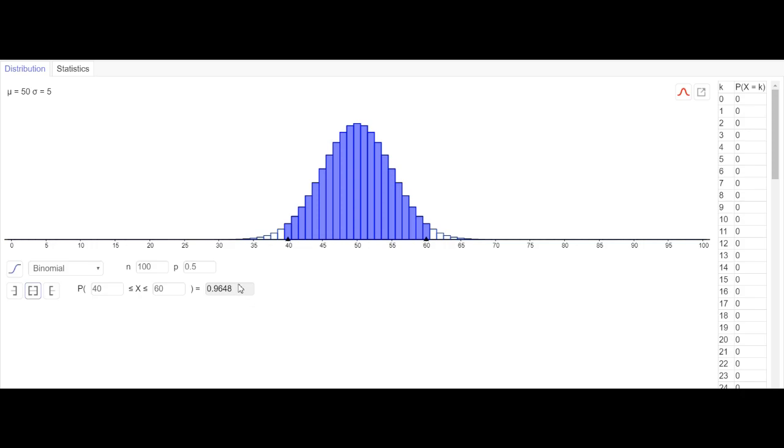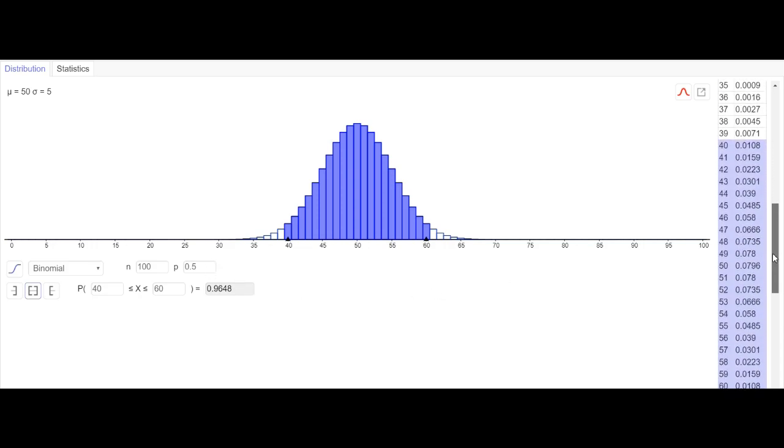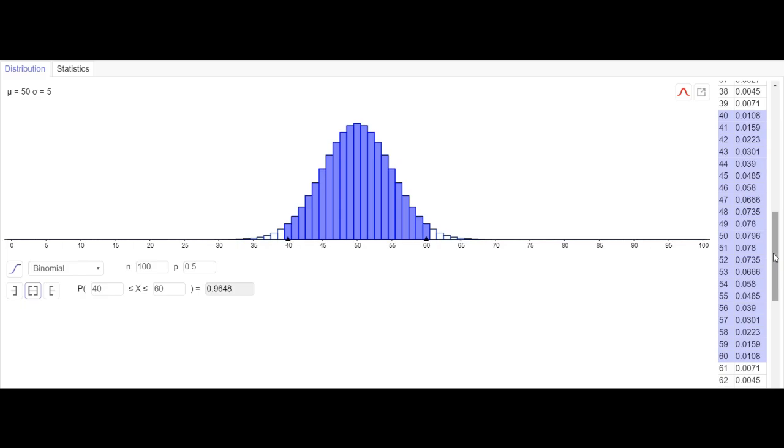And we can verify this value from our sheet as well. So if you add all the probabilities in the highlighted region it will add up to 0.9648. Let's call this 100 coin tosses equals to one set, and we are doing 100 sets of this.